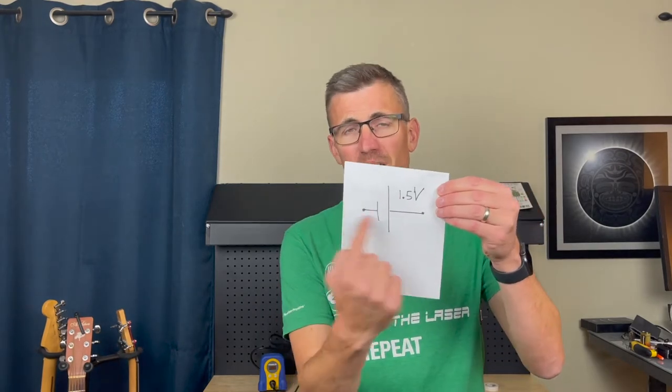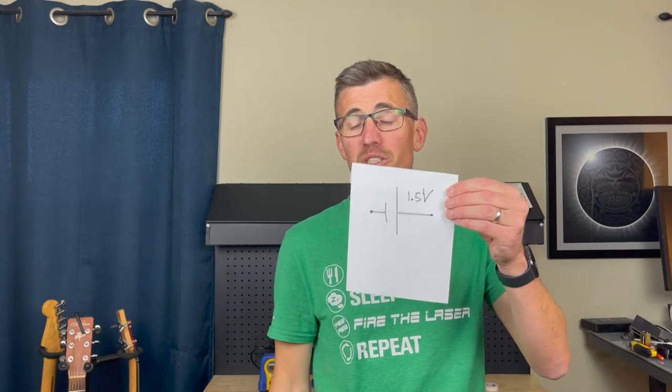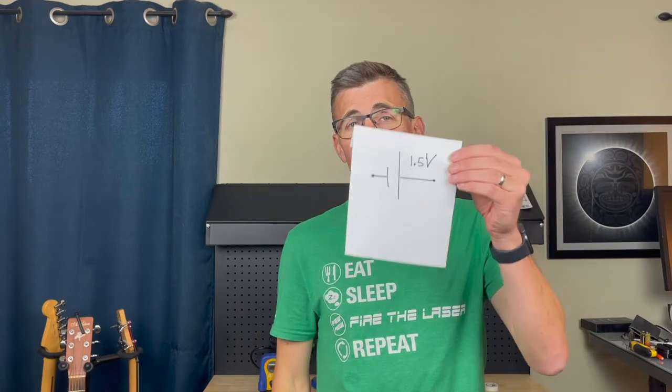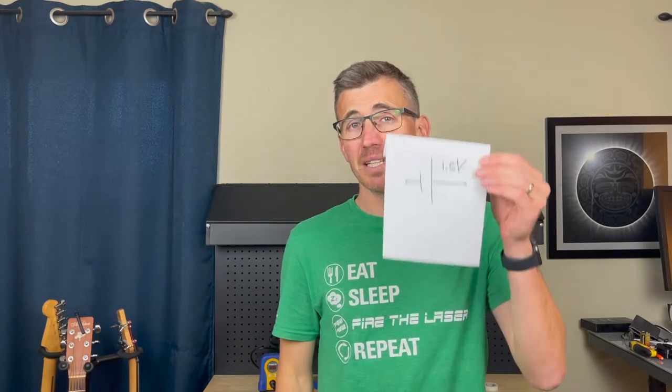Today I want to talk about voltage sources, specifically the difference between a real and an ideal voltage source. We'll also talk about the oft overlooked but equally important current source. If you ask me what a voltage source is, I might say this is a voltage source — it has some lines and a number telling you the voltage — but I also know that this is a voltage source: a battery. This is an ideal voltage source that I write in a schematic, and this is a real voltage source that I actually have to plug in. So what precisely is the difference between this and this?